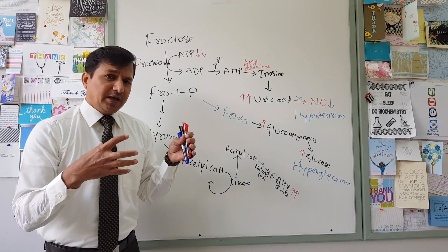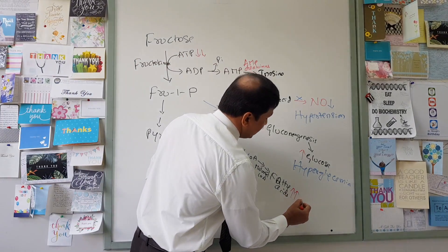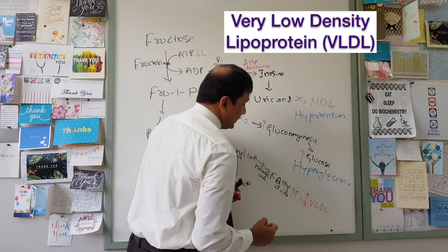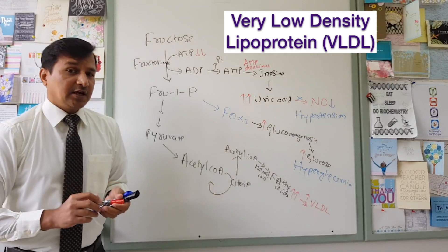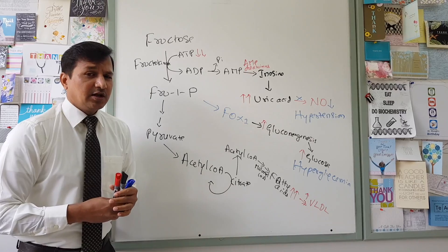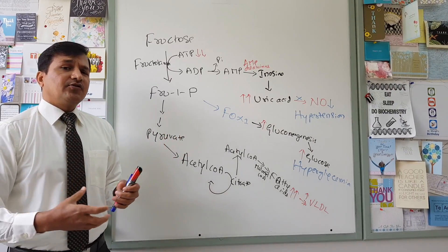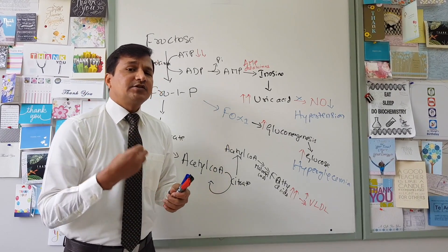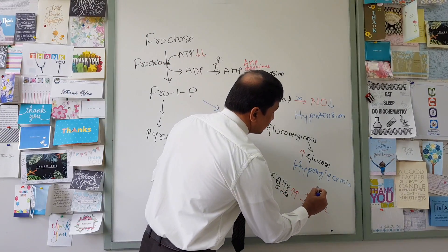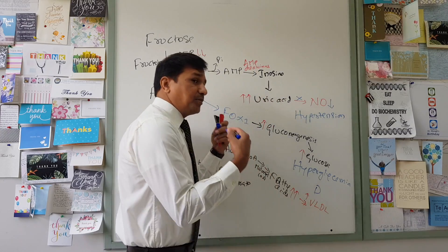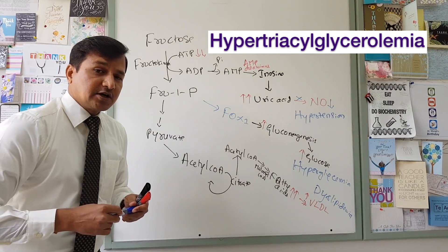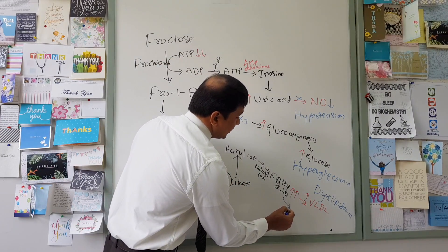The fatty acids are attached to glycerol-3-phosphate to make triacylglycerol in the liver. Triacylglycerol is then loaded onto ApoB-100 to form VLDL, which is secreted into the circulation. This causes elevation of VLDL — very low density lipoprotein — which is rich in triacylglycerol, leading to increased blood triglyceride levels and contributing to dyslipidemia seen in people consuming too much fructose.